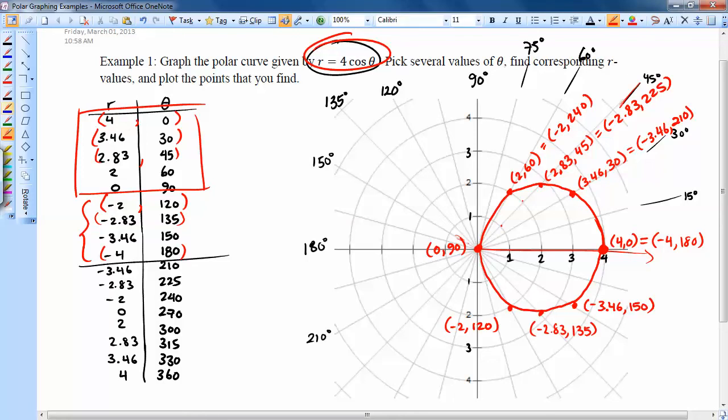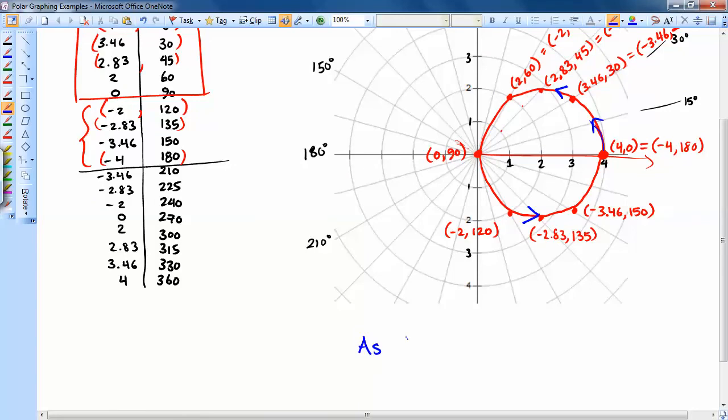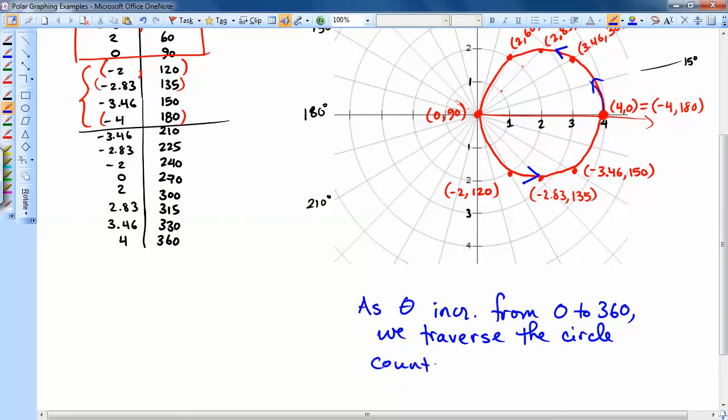So I'm going to add in arrows here. Arrows here. Because as theta gets bigger, we're going around in that direction. And then I'll add in some notes so that we have it here. So as theta increases from 0 to 360, we traverse the circle counter-clockwise, not once, but twice. Right? Because when we first got back here, it was only 180 degrees for theta. So we'd actually go around a second time.